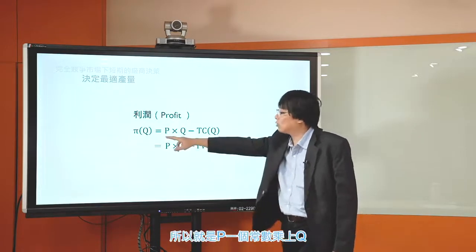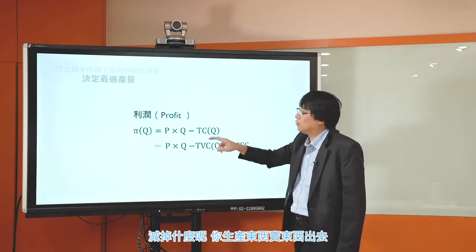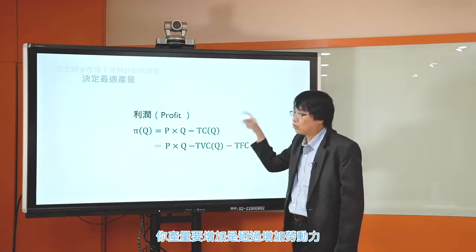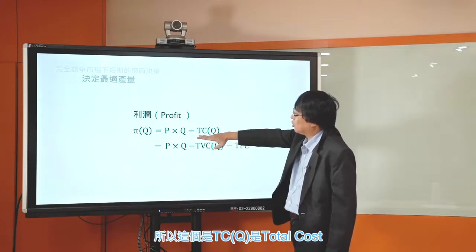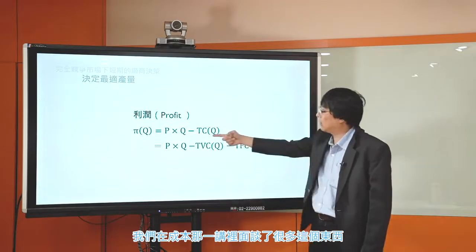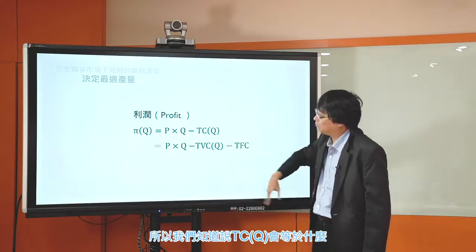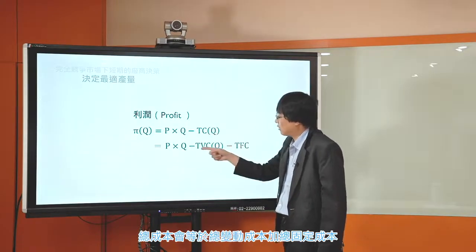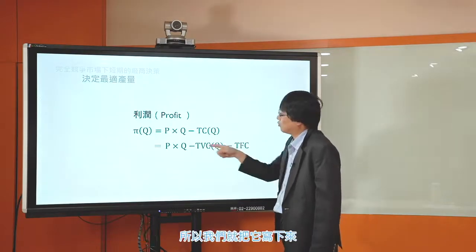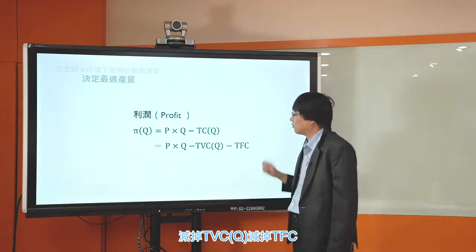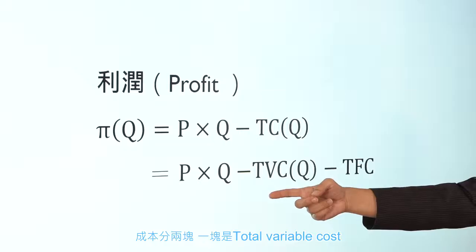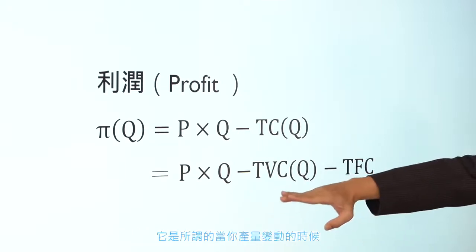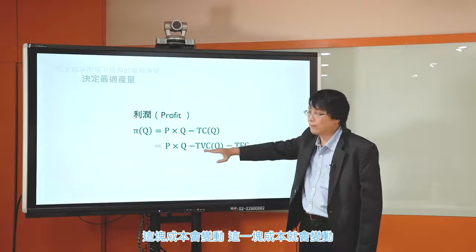在完全競爭市場下，P是市場價格，不論你要生產多少，你總是可以用一個固定的價格來賣，所以P基本上恆定不動。接下來是TC(Q)，也就是Total Cost。總成本分兩塊：第一塊是Total Variable Cost（總變動成本），當你產量變動的時候這一塊成本會變動；第二塊是TFC（Total Fixed Cost，總固定成本）。